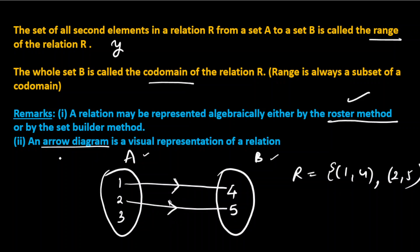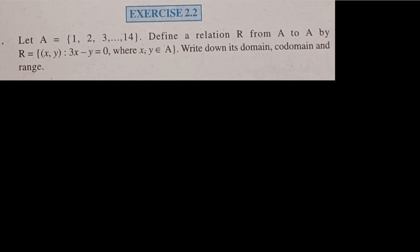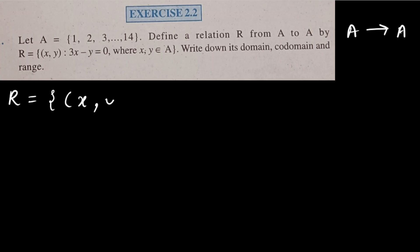With this we have completed the concepts required for this exercise. Now let's start exercise 2.2. First question: let A = {1, 2, ..., 14}. Define a relation R from A to A — so same set to same set — where the relation given is (x, y) such that 3x − y = 0.